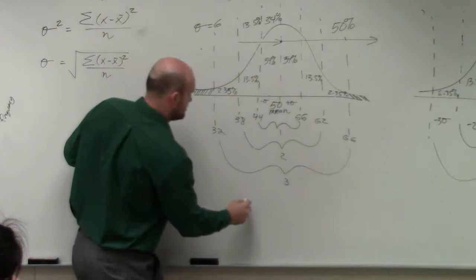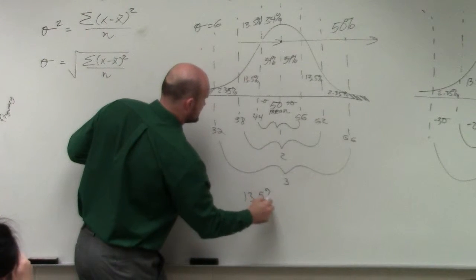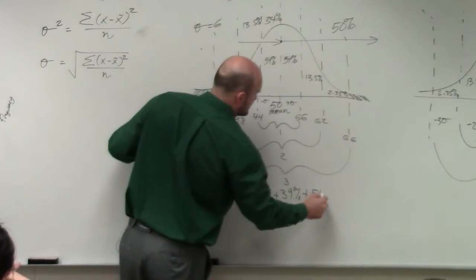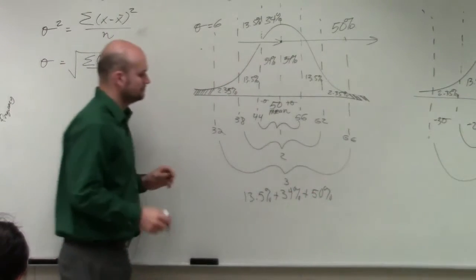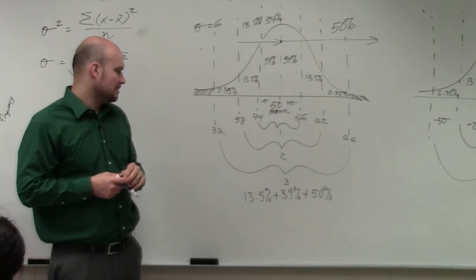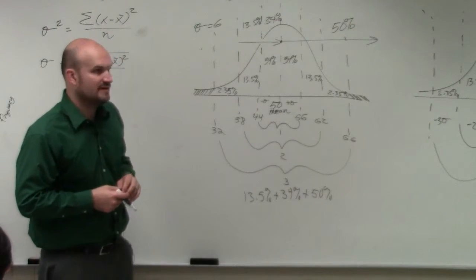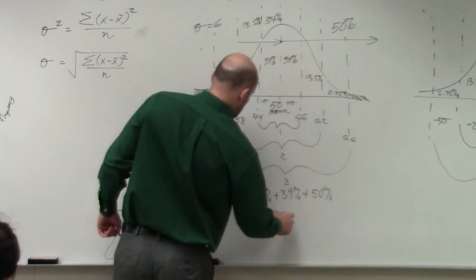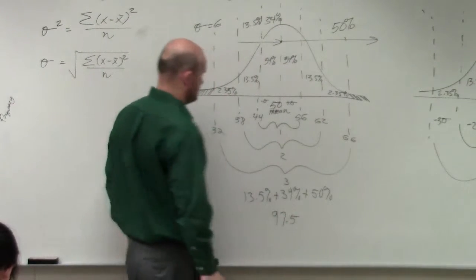So basically, the math is going to be 13.5% plus 34%. So that's going to be 47.5, so that's going to be 97.5%.